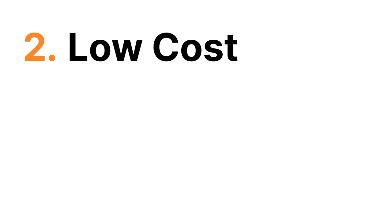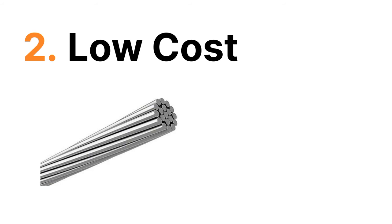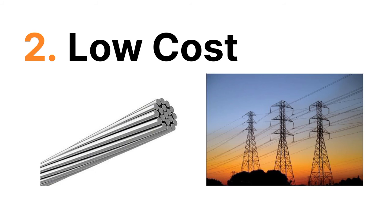The second reason for preferring aluminium in the transmission line is that it is lower in cost. The cost of aluminium is lower than any other type of material, so that's why we prefer it for the transmission line.